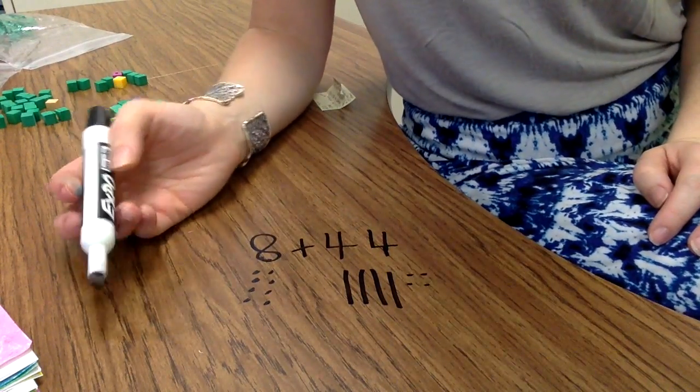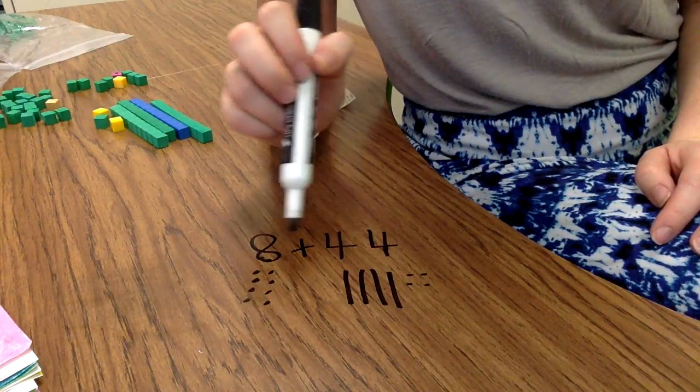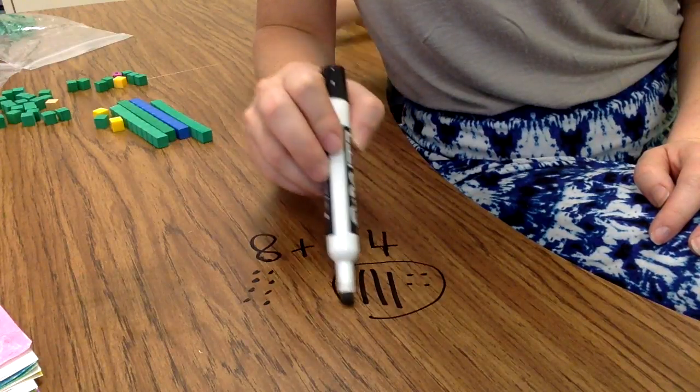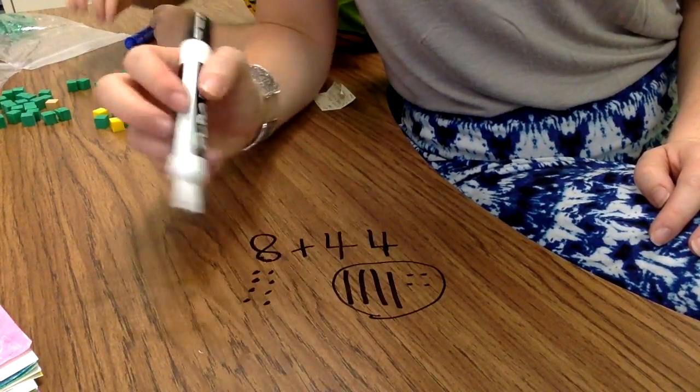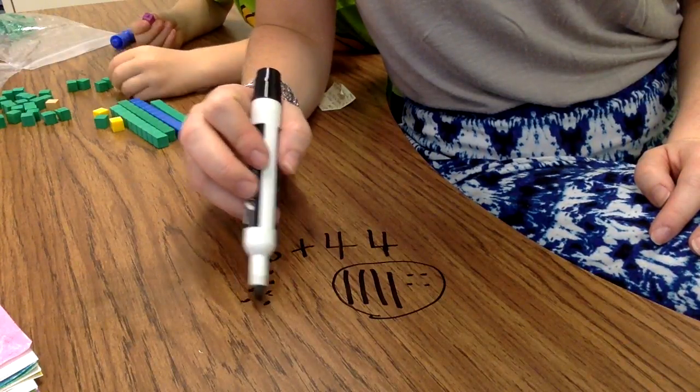And now I'm going to start again with the larger addend because it's easier to add on if I start with the larger addend. So I know this is 44. I don't need to count it again. 44, 45, 46, 47, 48, 49, 50, 51, 52.